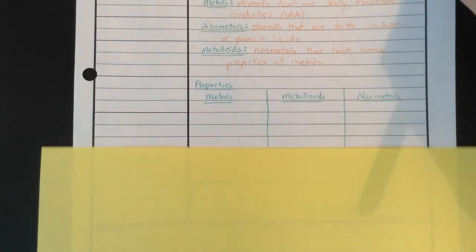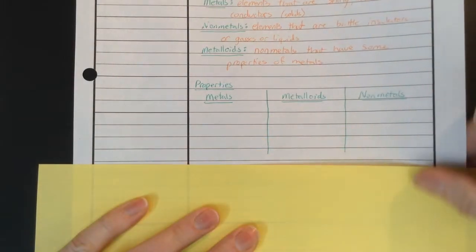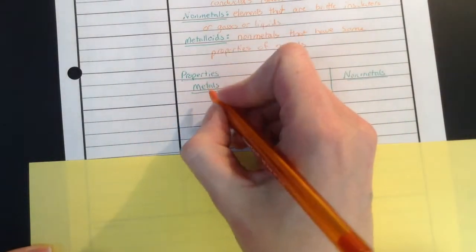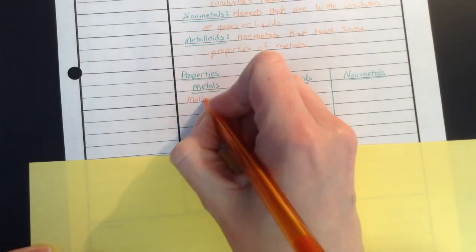So when we talk about the properties, we'll talk about those. And so I made a little chart here to talk about the properties. And I put metals or metalloids in between, because they're kind of a combination of the metals and the nonmetals, so we'll be able to see that here. So the first thing we can talk about is that metals are malleable.